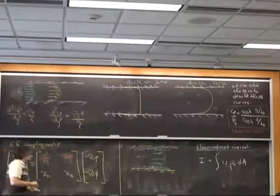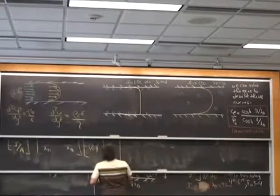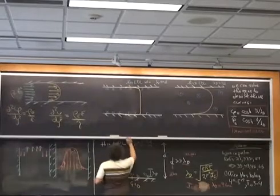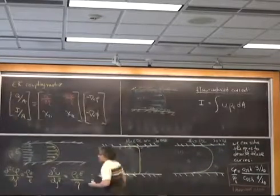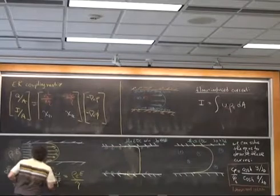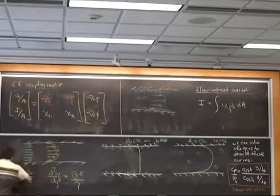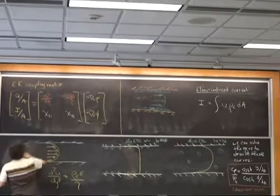If we take the specific case of flow generated by a pressure gradient in a thin double layer limit, then we can get a relatively straightforward description of what this current is.